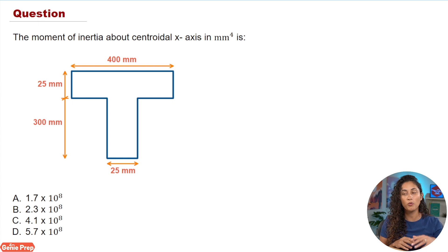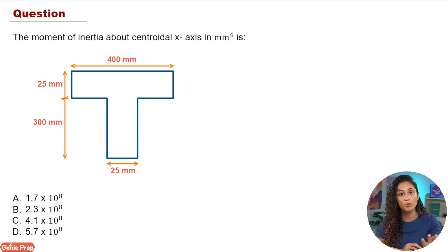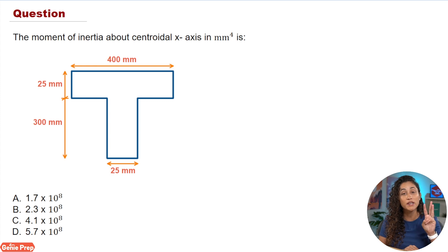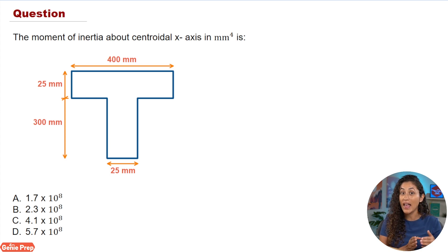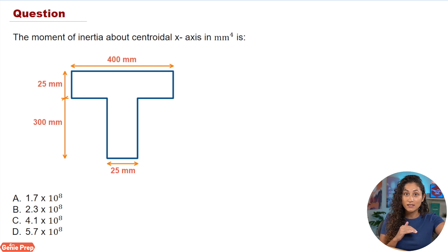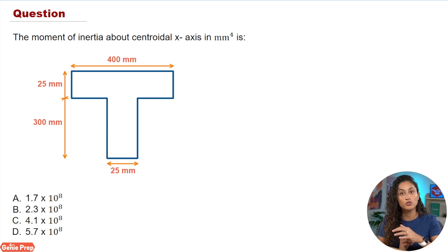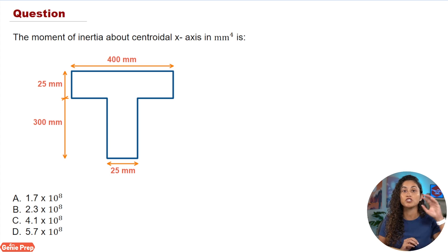In this problem we are given this shape and we need to find the moment of inertia about the centroidal x-axis. You need to remember that you could be asked to find the moment of inertia in three different ways: moment of inertia about the centroidal x or y axis, about the x and y axis, or about a given axis. Today we're going to focus on the centroidal x-axis.